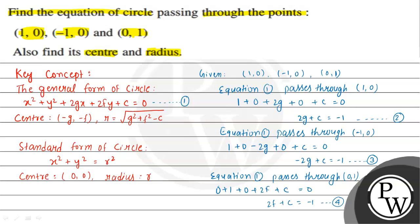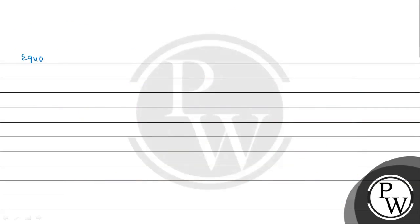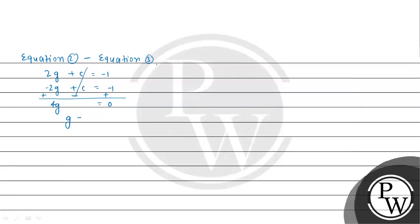Now we find the values of g, c, and f. Subtracting equation 3 from equation 2: (2g + c) - (-2g + c) = -1 - (-1). The c terms cancel, giving 4g = 0, therefore g = 0.